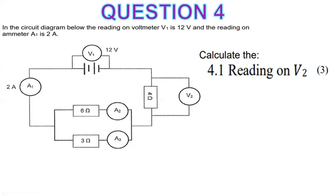Question 4.1: reading on V2. In the circuit diagram below, the reading on voltmeter 1 (V1) is equal to 12 volts. This is an easy one, just like grade 10 topics, because there's no internal resistance. So 12 volts is our main voltage. Main current is also given. All resistors are given: we have 6 ohms, 3 ohms, and 4 ohms.